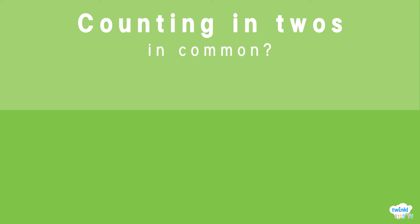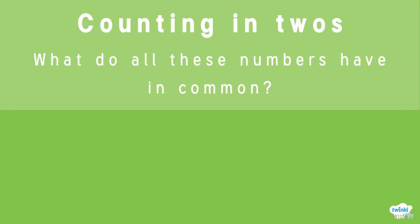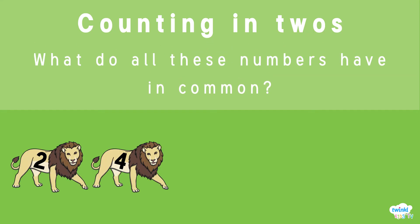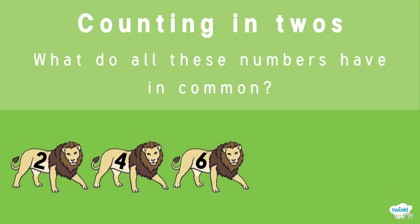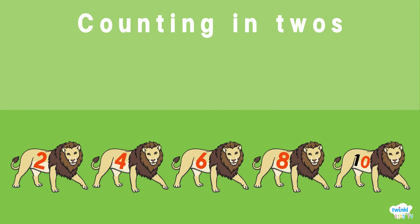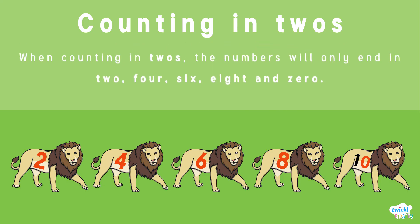The next set of numbers we are counting are the 2s. 2, 4, 6, 8, 10. They are all even numbers. When counting in 2s, the numbers will only end in 2, 4, 6, 8 and 0.